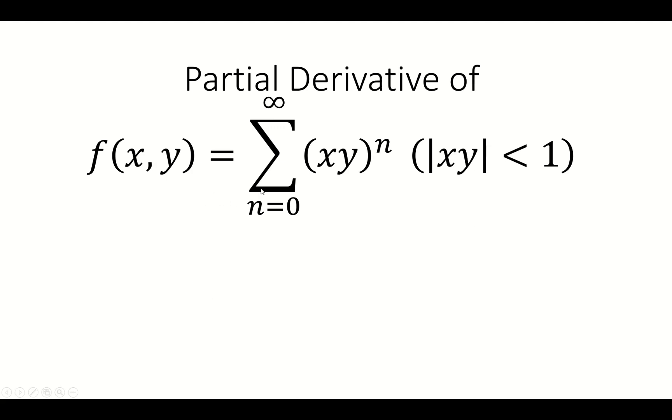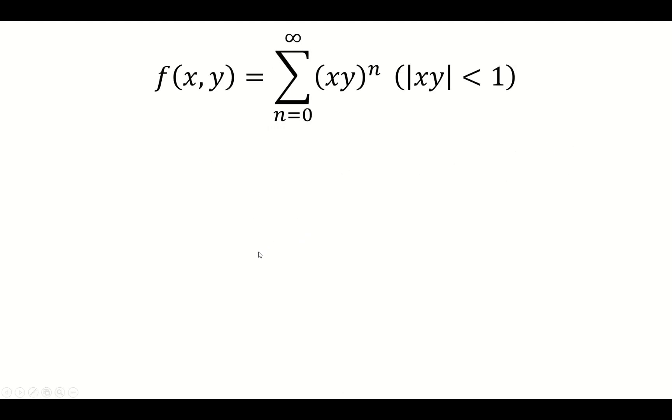We want to find the partial derivative of f(x,y) equals the sum from n equals 0 to infinity of (xy)^n, where the absolute value of xy is less than 1.